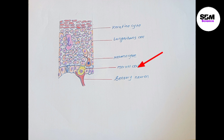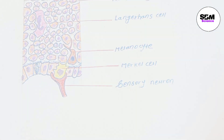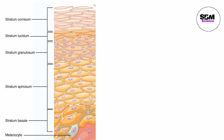Merkel cells are oval-shaped type 1 mechanoreceptors located in sites of high tactile sensitivity. The Merkel cell has a neuroendocrine function. These cells are very close to nerve endings that receive the sensation of touch. The epidermis is divided into five sublayers: stratum corneum, stratum lucidum, stratum granulosum, stratum spinosum, and stratum basale.